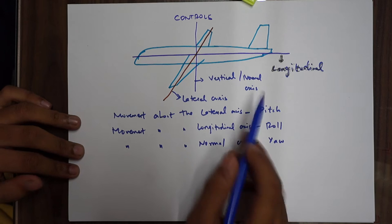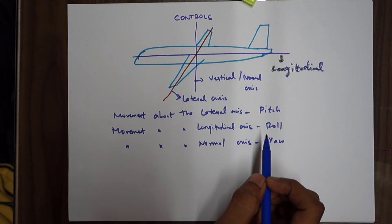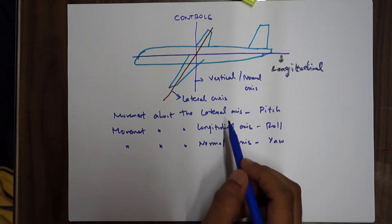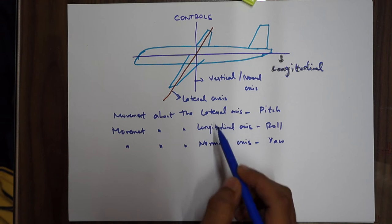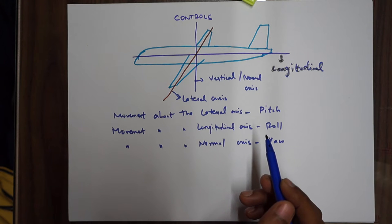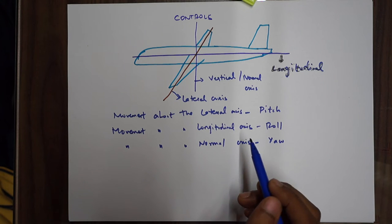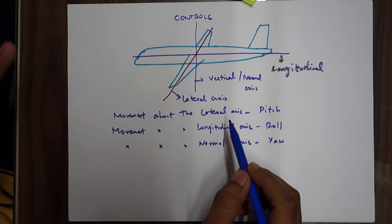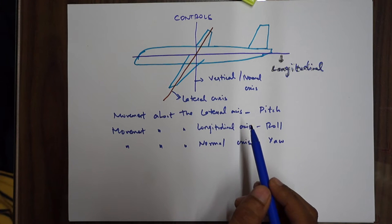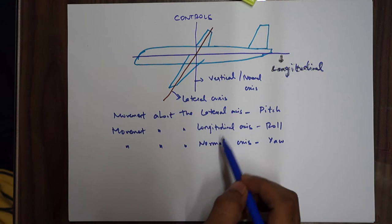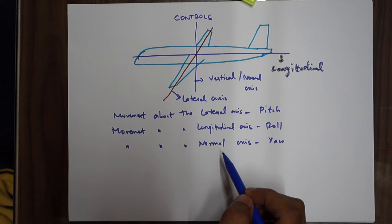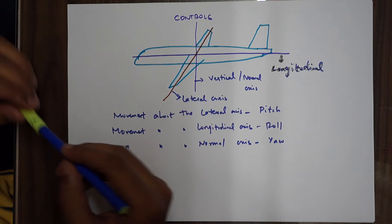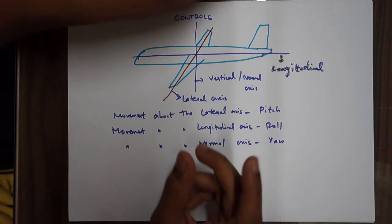This is important — it could be confusing. Also, if you remember from the previous video, we discussed that longitudinal stability is motion around the lateral axis, so this can be confusing. Just keep it clarified and noted. Now we'll discuss the basic primary control surfaces — there are three.